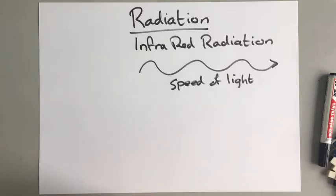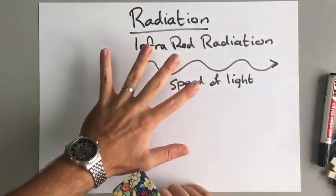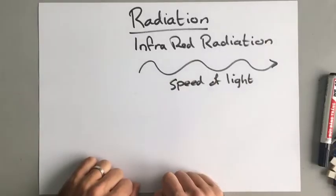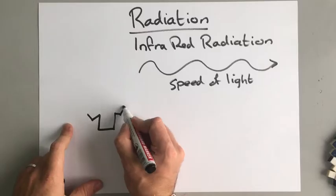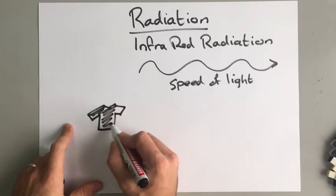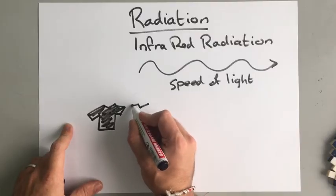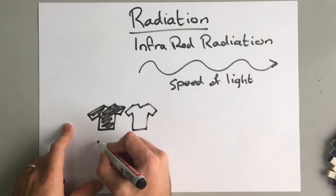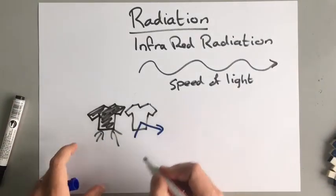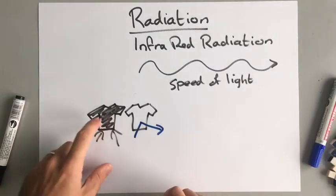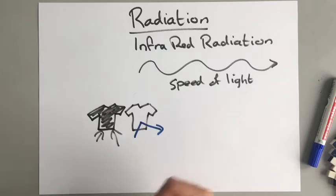The sun is much hotter, so it gives us much more infrared radiation. Even my hand is giving out some infrared radiation because it's hotter than the surroundings. If you stand outside on a sunny day in a black T-shirt, you know that the black T-shirt will absorb more heat than a white T-shirt. That's because the white T-shirt reflects more of the infrared radiation, whereas black absorbs it. So black absorbs more infrared radiation.